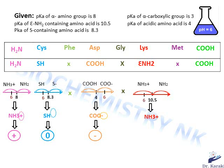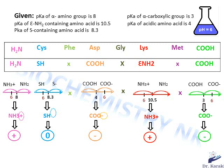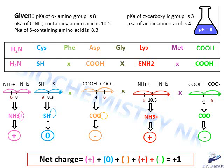Methionine doesn't have an ionizable group. Finally, the terminal alpha carboxyl function has a pKa of 3. At pH 6, which is higher than 3, COO− predominates and is negatively charged. So the net charge of this peptide chain is equal to +1.